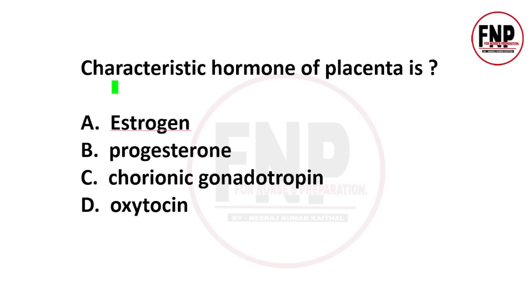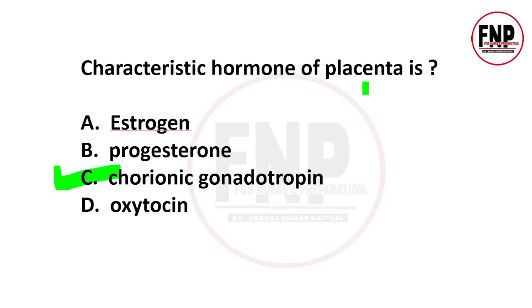Next question: characteristic hormone of placenta है? Options — estrogen, progesterone, chorionic gonadotropin, या oxytocin। Option C correct है। Placenta की syncytiotrophoblast cells द्वारा human chorionic gonadotropin (HCG) नाम का hormone secrete किया जाता है, जो pregnancy को maintain करने के लिए responsible माना जाता है।